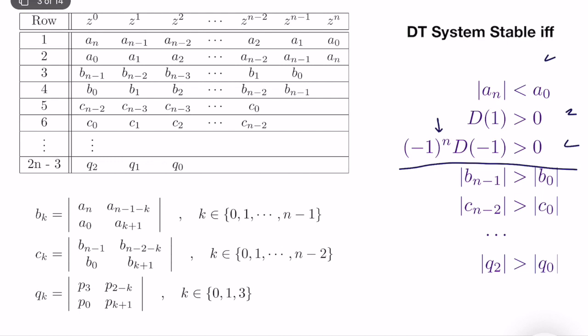Once you are done with all of those conditions and they are checked, what you do next is verify that the magnitude of b(n-1) is larger than the magnitude of b0. The magnitude of the last coefficient of b must be larger than the magnitude of the first coefficient of b. We do the same thing for b, c, until q. When computing the stability conditions, we only use the coefficients at the end and at the start for b, c, and so on. The basic structure is not that complicated, even if a little more computational.